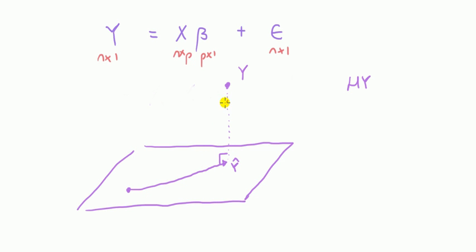If Y hat was here, that would be longer. So to say again, H is an orthogonal projection matrix that projects a vector onto the column space spanned by X.